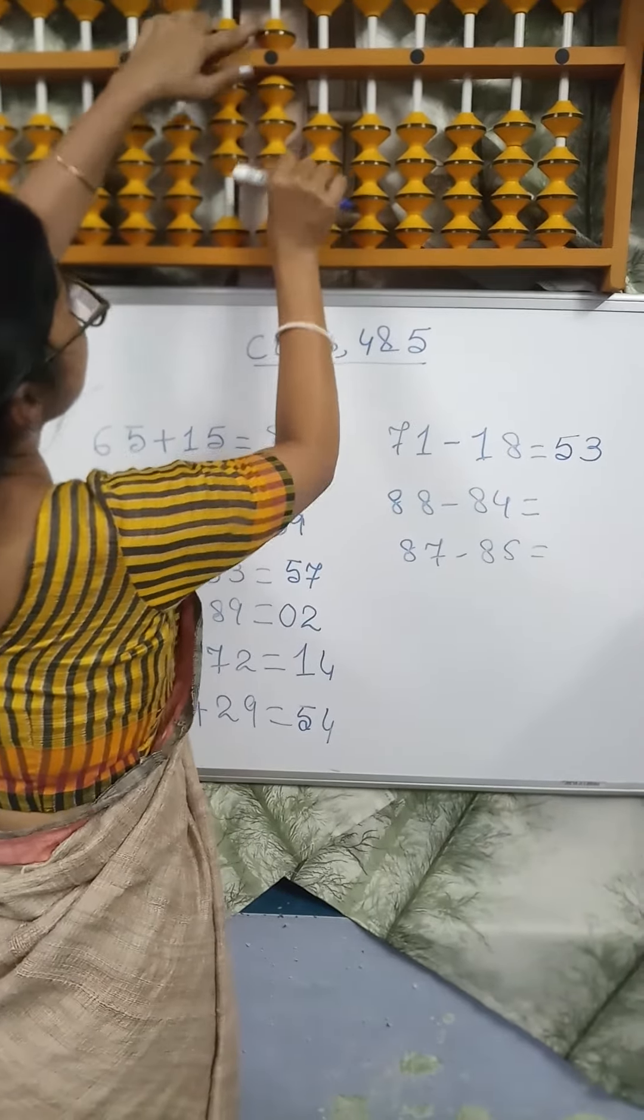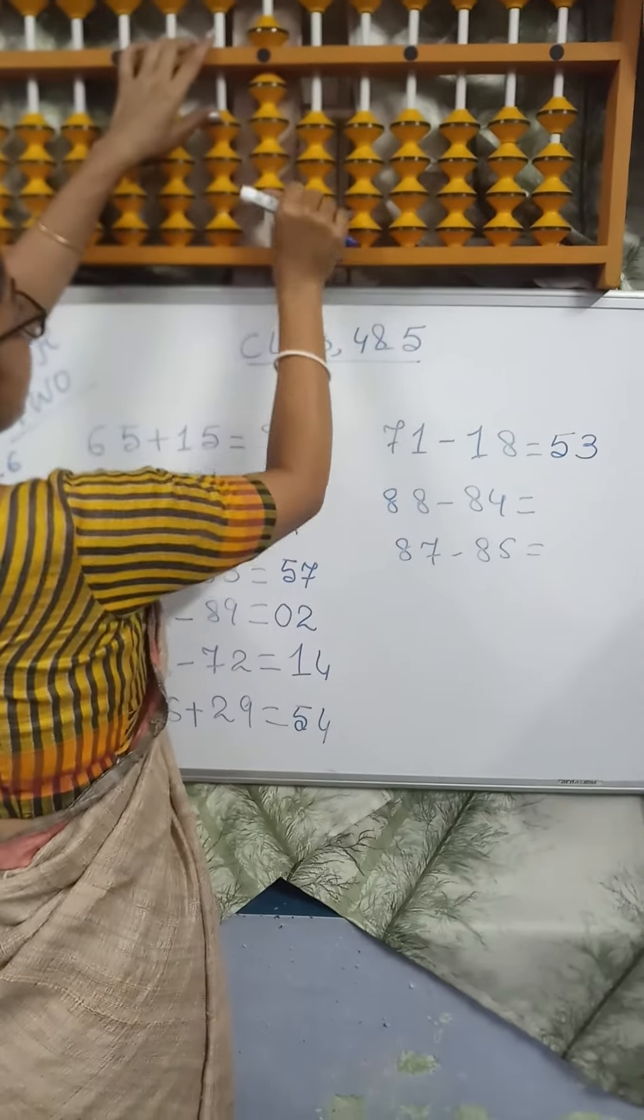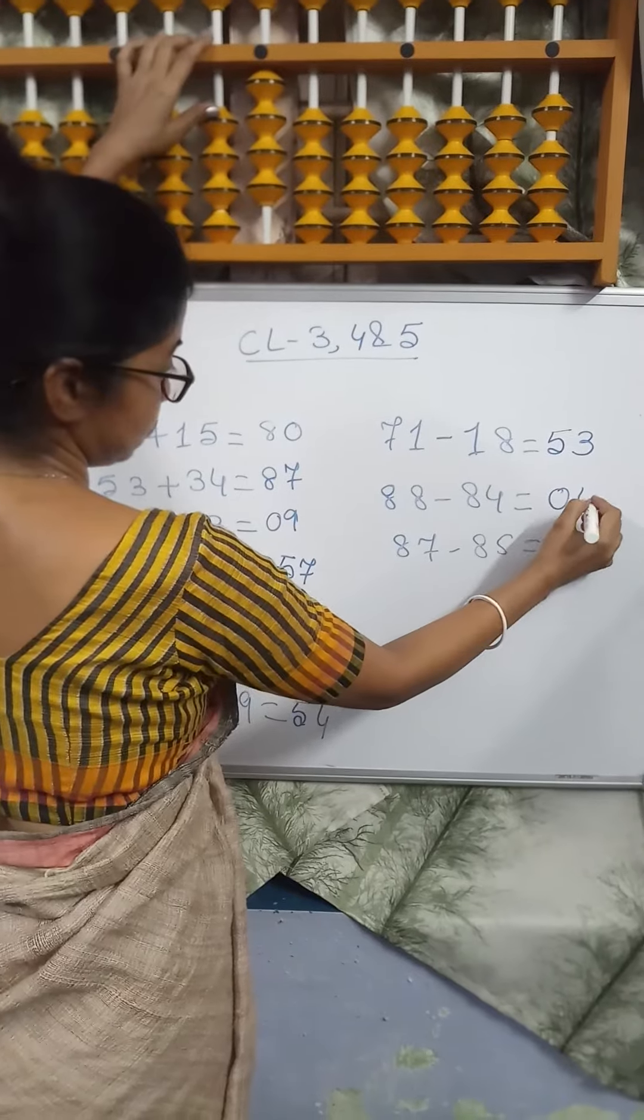88 minus 84. Minus 80 direct, 4 minus 4, plus 1 minus 5. Answer is 04.